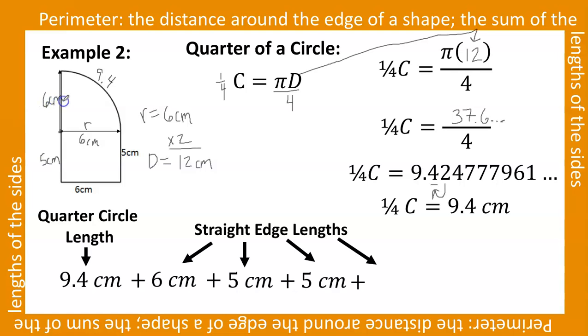And then I can add the 6 centimeters down here to get a total of 31.4 centimeters. 31.4 centimeters is the distance around the edge of this composite shape. The 31.4 is the perimeter of this shape.